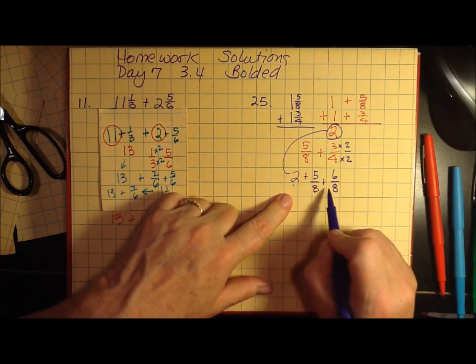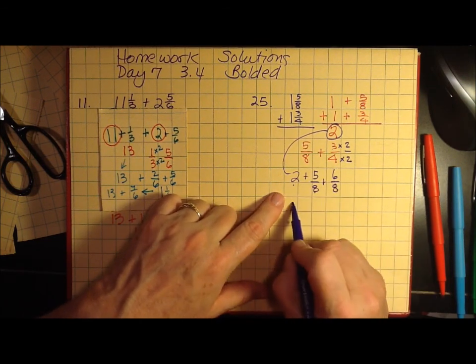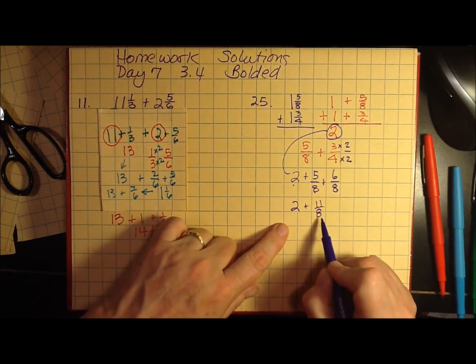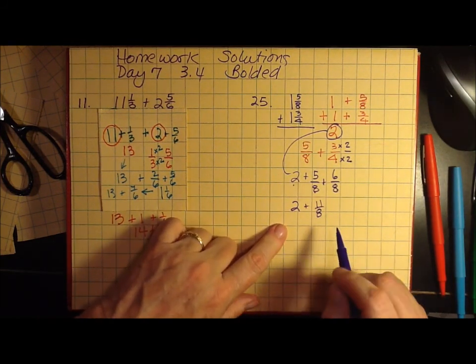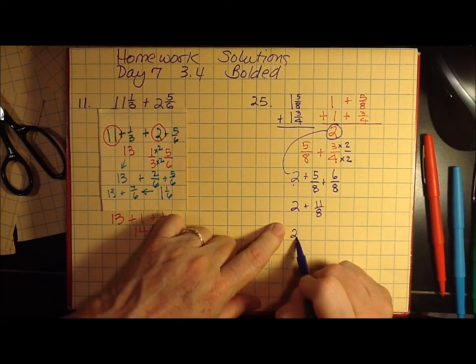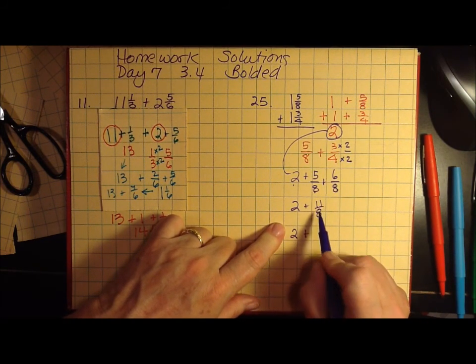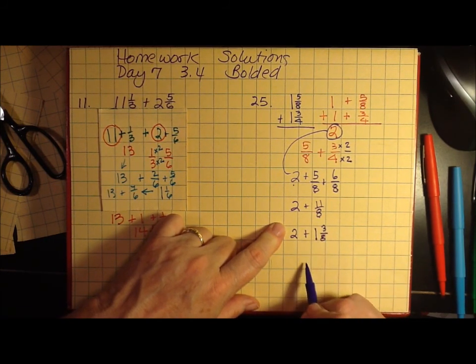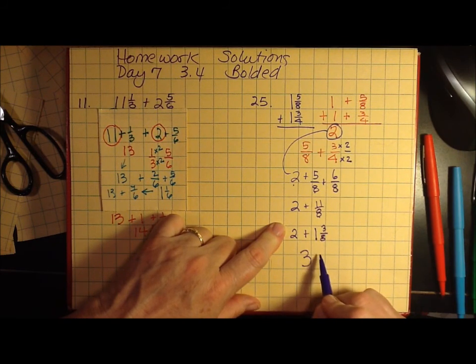So I have 2 plus five-eighths plus six-eighths is 2 plus eleven-eighths. Oh no, we have an improper fraction, so we have to clean that up. That's the same as 2 plus 8 goes into 11 one time with 3 over 8 left over. So my total for this is 3 and three-eighths.